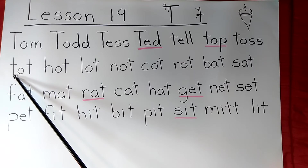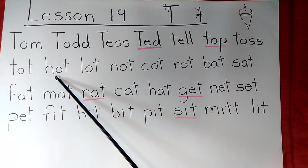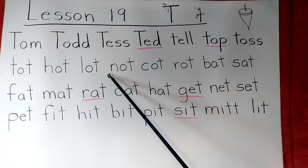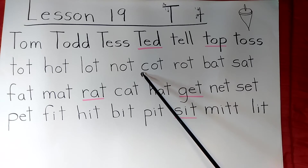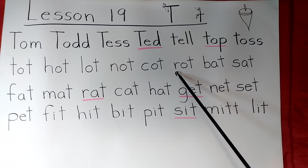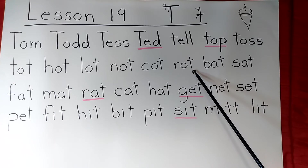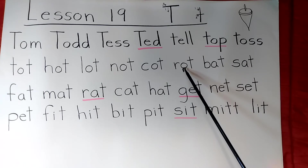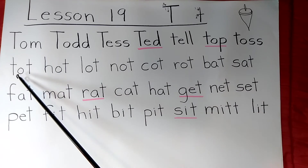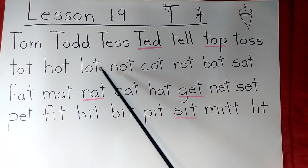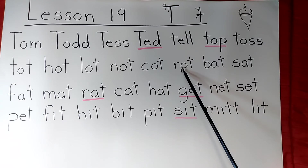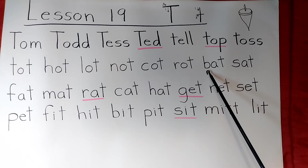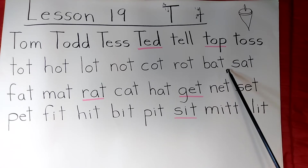Toss. Tot — a tot is a little child; it's kind of a nickname for a little child. Hot, lot, not, cot, rot. So we've got six rhyming words there: tot, hot, lot, not, cot, rot.